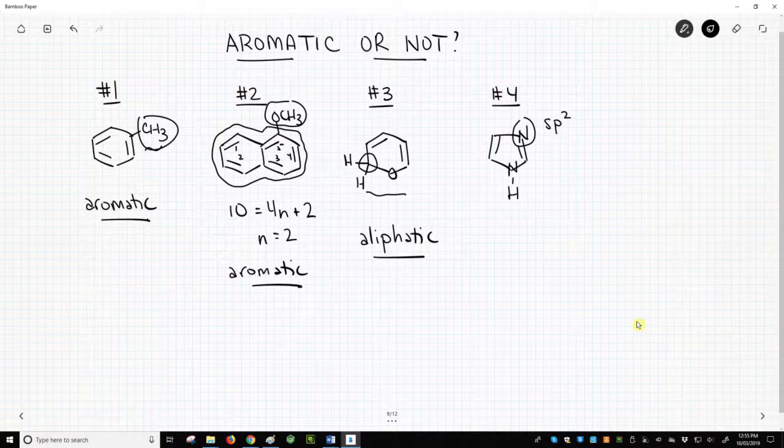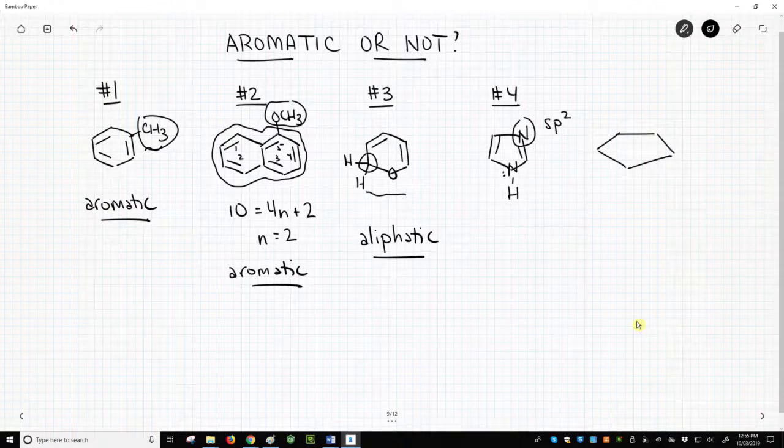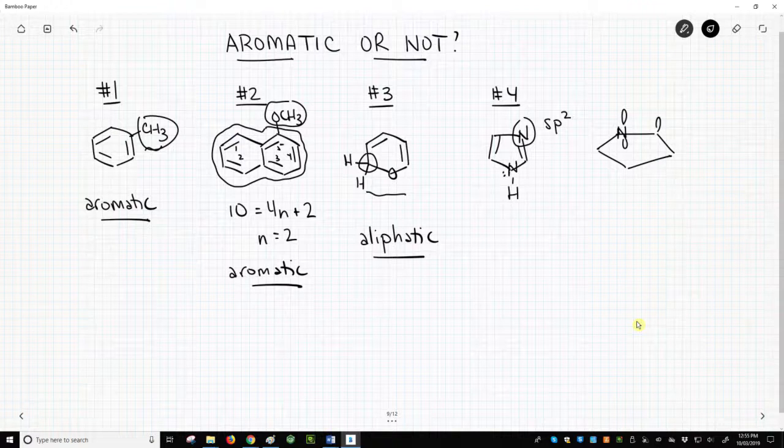If the lone pair is in a p orbital, then it can be sp2. Let's draw the structure with some perspective to demonstrate what we have been discussing.